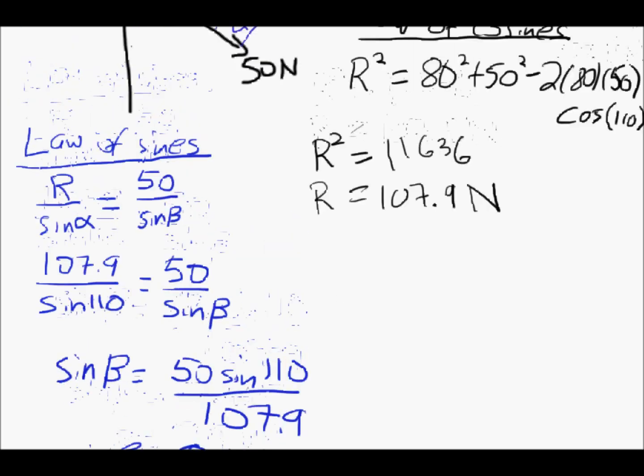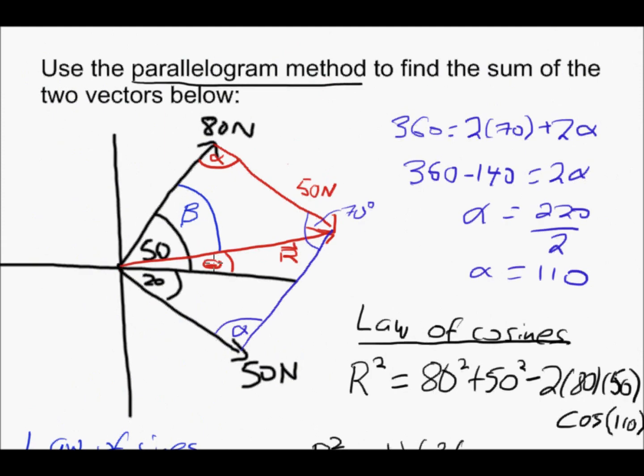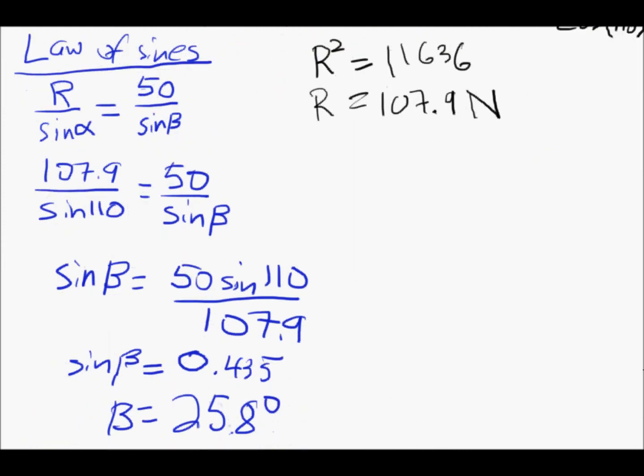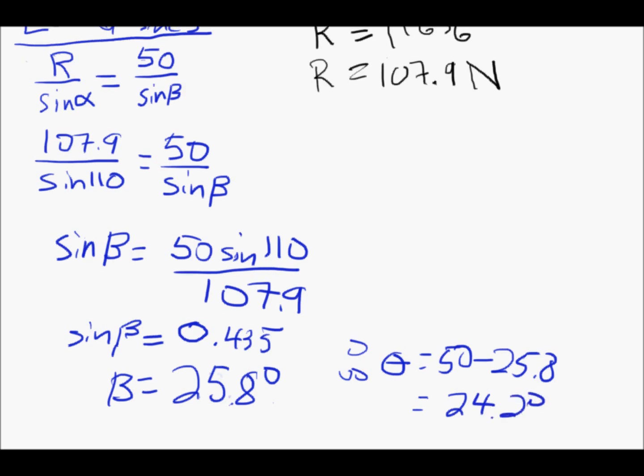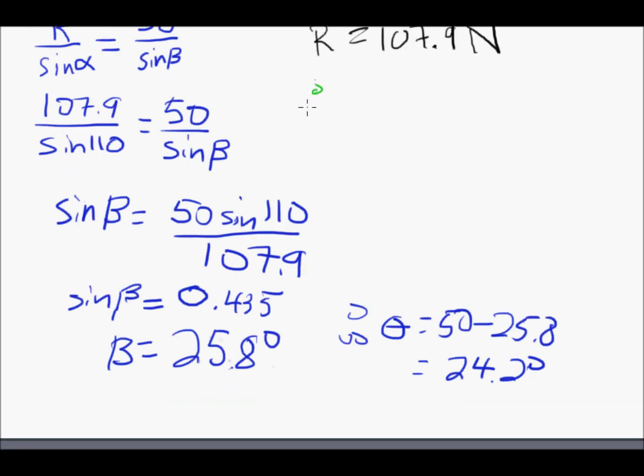So if beta is 25.8, that's still not the answer. That means theta is 50 minus that much. 50 minus 25.8 makes 24.2 degrees. So that's going to be the answer. The resultant vector, the resultant is 107.9 Newtons at 24.2 degrees.